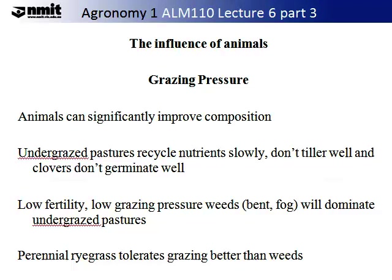Under-grazed pastures recycle nutrients slowly, don't till well and clovers don't germinate well. Low fertility and low grazing pressure allow weeds such as bent and fog grass to dominate under-grazed pastures. Perennial ryegrass tolerates grazing better than weeds.